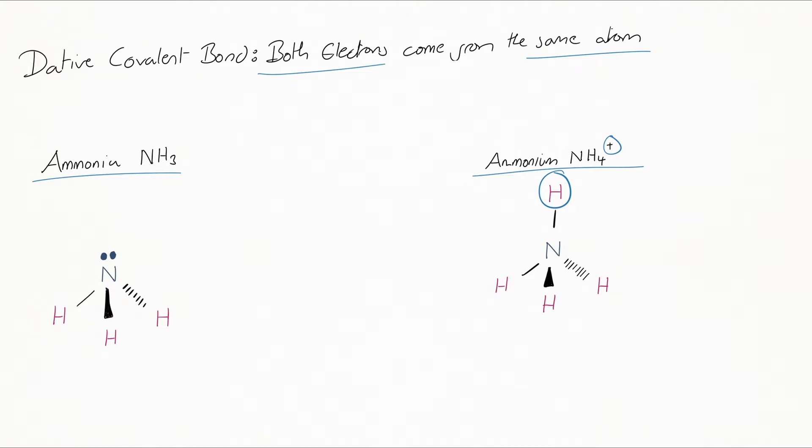If the ammonia was to come across a proton, hydrogen, which has no electrons in its outer shell, it would be able to form a dative covalent bond here, and that would therefore form ammonium. Before we move on, let's draw ammonium as a stick diagram.